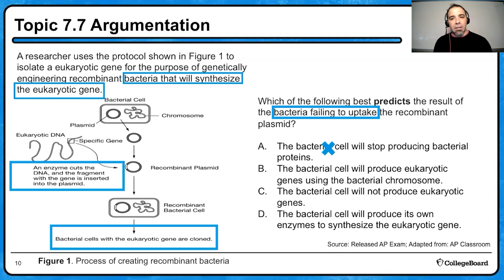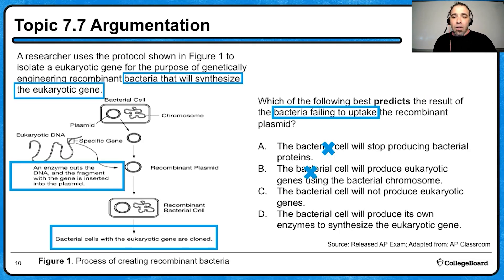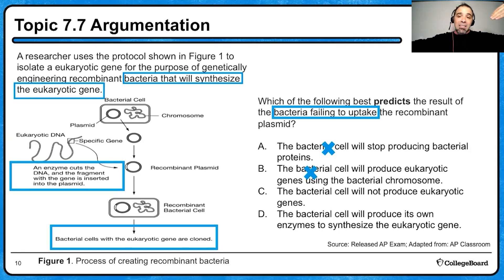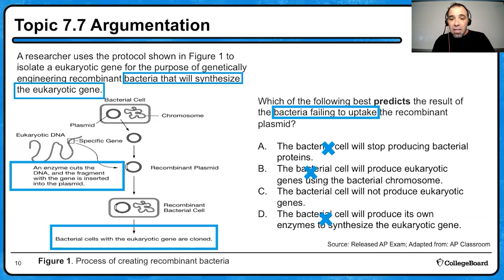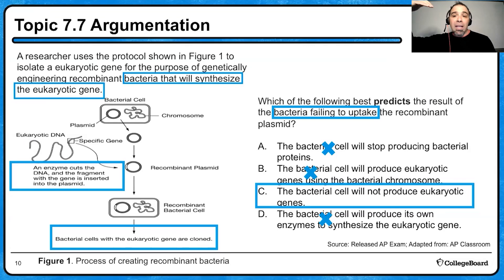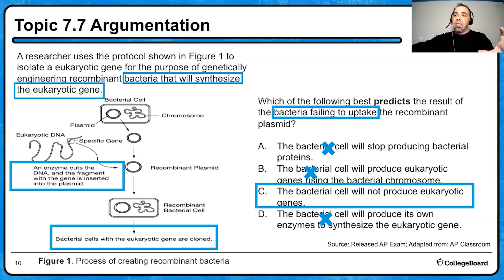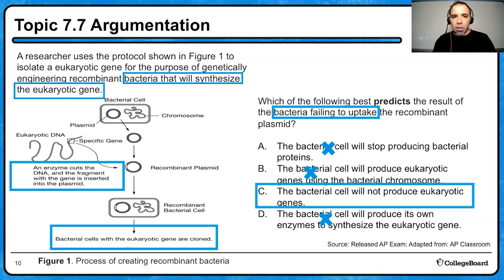A — the bacterial cell will stop producing bacterial proteins — is not a good answer; it's already producing bacterial proteins. B — the bacterial cell will produce eukaryotic genes using the bacterial chromosome — if it hasn't taken up the recombinant plasmid, it won't produce that gene. D — the bacterial cell produces its own enzymes to synthesize the eukaryotic gene — it can't just switch those genes on. So the best answer is C: the bacterial cell will not produce eukaryotic genes because it has not incorporated that recombinant DNA or recombinant plasmid. The fact that bacteria can take these plasmids and produce eukaryotic proteins indicates common ancestry.